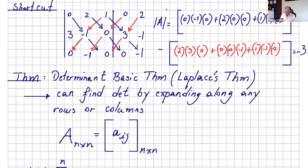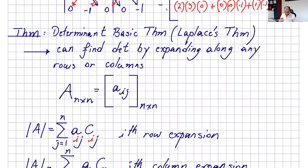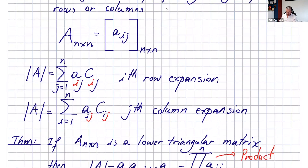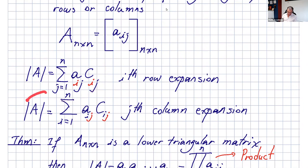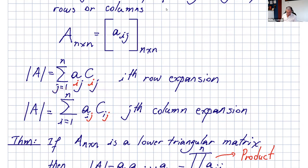I said you can find the determinant of a matrix by expanding along any row or any column. For row i expansion, this is the formula for the determinant — know that formula. And for column j expansion, this is the formula for the determinant.